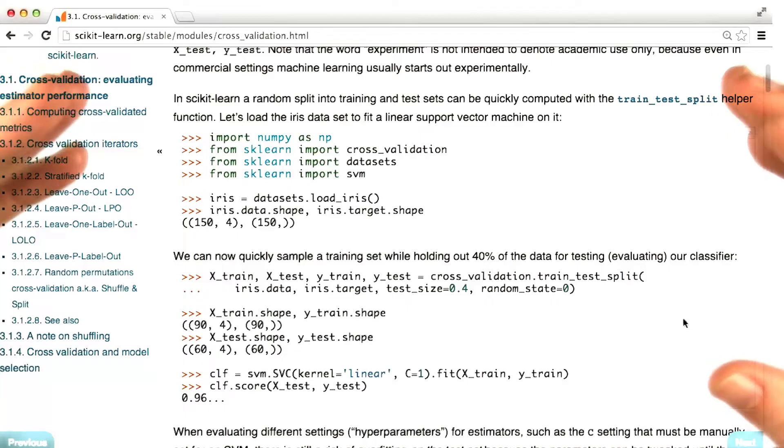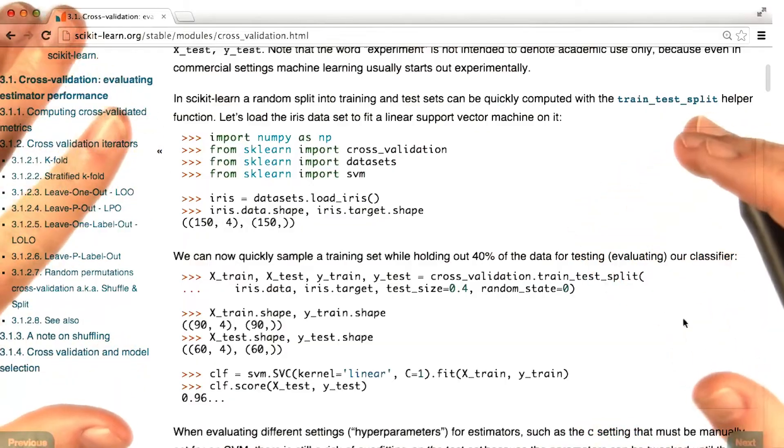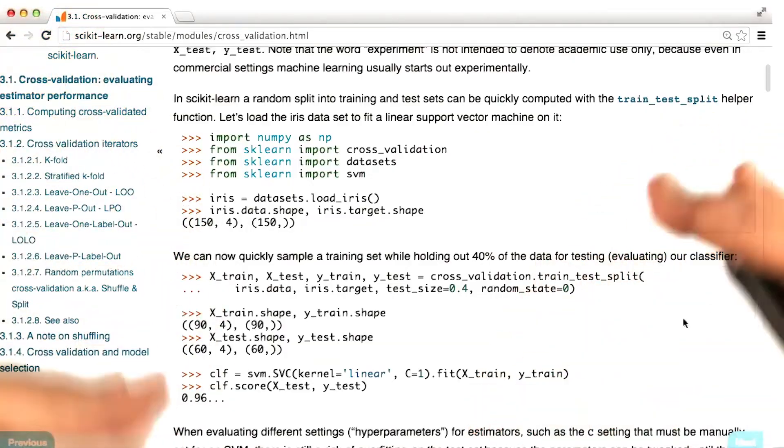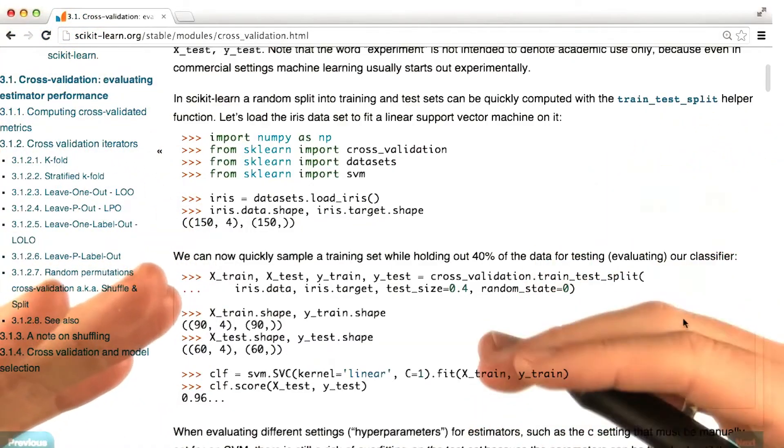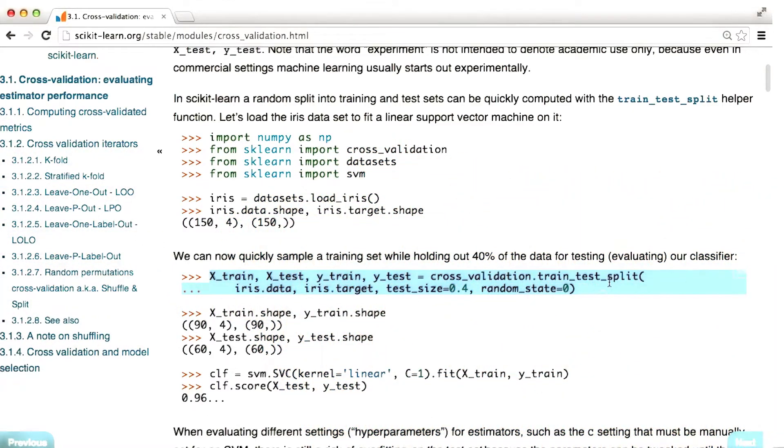Now one of the things that maybe you noticed on some of the mini projects, if you were paying very close attention, is that we've actually been deploying this code all along. So in all of the, for example, classifier training exercises that you did, there was a line of code that was very similar to this one, where I was splitting the data into a training and testing split for you.